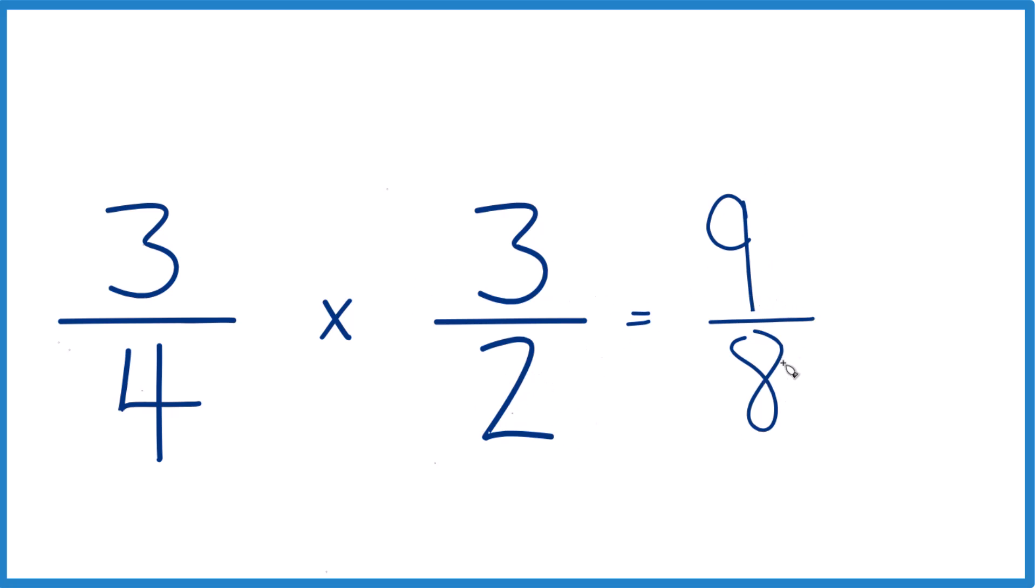This is an improper fraction. We could change it to a mixed number. Eight goes into nine. One times eight is eight with one left over. Bring the eight across, and you get one and one-eighth.